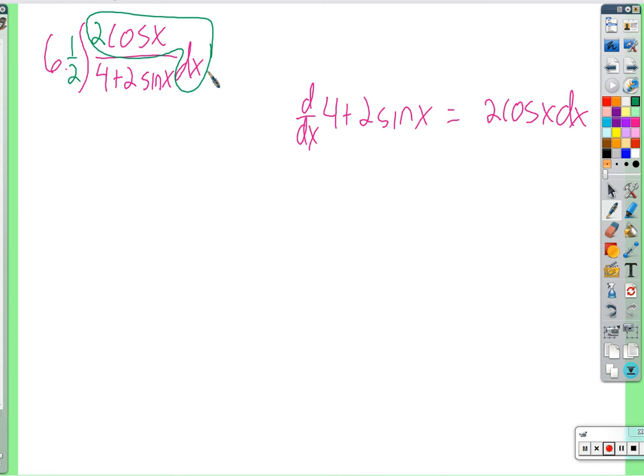Absolute value. Natural. Natural log. So one half natural log of the absolute value of four plus two sine x, plus c.